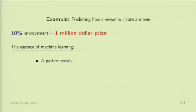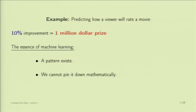The first component is that a pattern exists. If a pattern didn't exist, there would be nothing to look for. There's no question that the way a person rates a movie is related to how they rated other movies, and also related to how other people rated that movie — so there is a pattern to be discovered. However, we cannot pin it down mathematically. We can't write a 17th-order polynomial that captures how people rate movies. The fact that there is a pattern we cannot pin down mathematically is the reason we go for machine learning — learning from data.